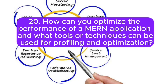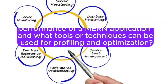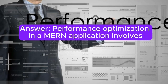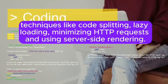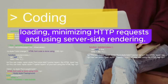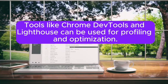20. How can you optimize the performance of a MERN application, and what tools or techniques can be used for profiling and optimization? Answer: Performance optimization in a MERN application involves techniques like code splitting, lazy loading, minimizing HTTP requests, and using server-side rendering. Tools like Chrome DevTools and Lighthouse can be used for profiling and optimization.